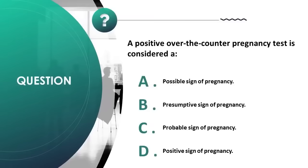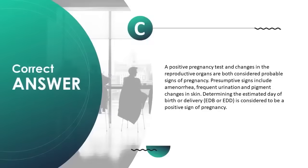A positive over-the-counter pregnancy test is considered: A) possible sign of pregnancy, B) presumptive sign of pregnancy, C) probable sign of pregnancy, D) positive sign of pregnancy. Correct answer is C. A positive pregnancy test and changes in the reproductive organs are both considered probable signs of pregnancy.